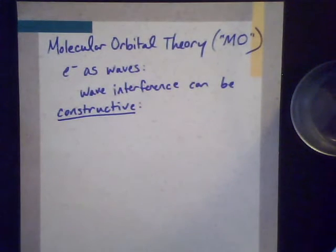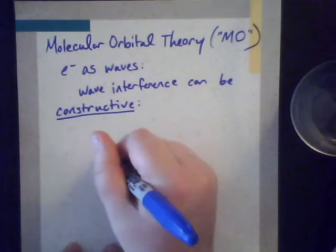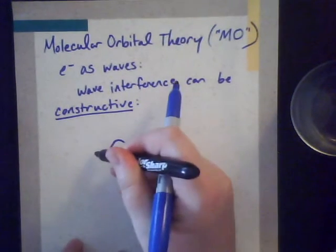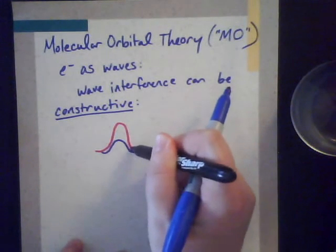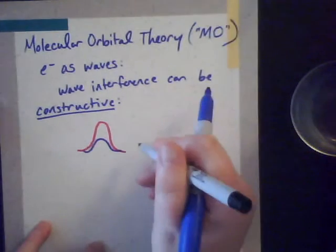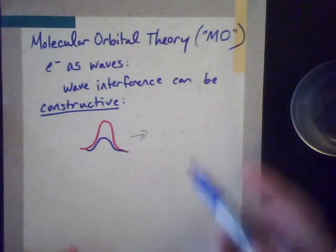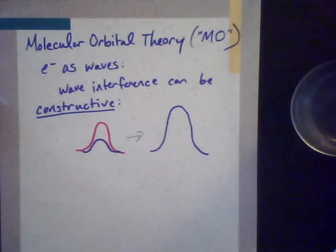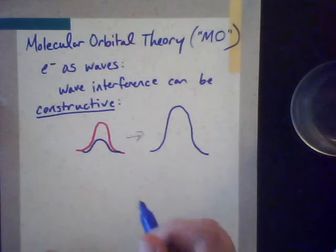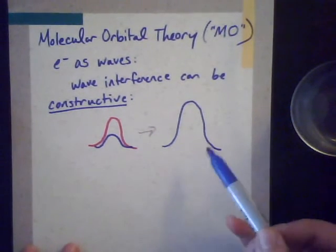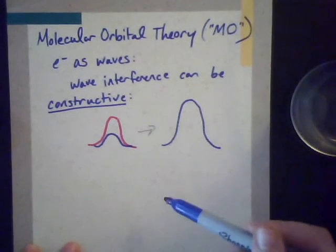Constructive interference means that we're building up, we're constructing something. So if we have one wave here, and another wave in the same position overlapping it, then the resulting wave from putting the two of them together is going to be something that looks larger than either one of the two. They interfered with each other constructively — they got larger when they interfered. This constructive interference means that it's larger in scale.